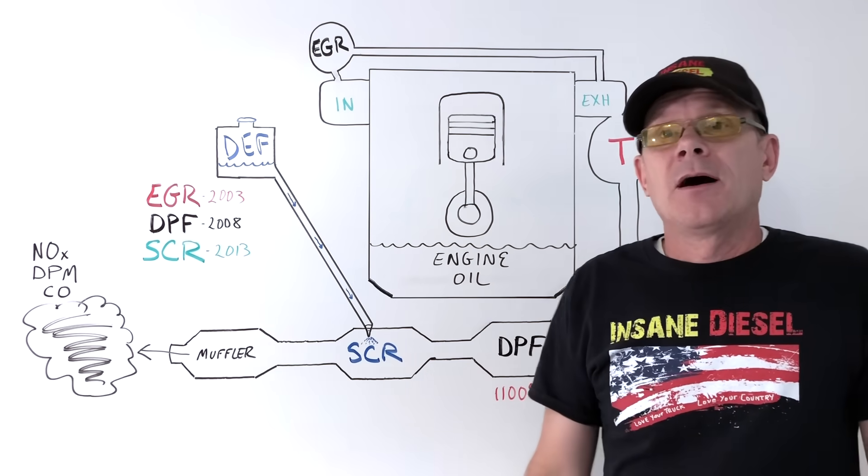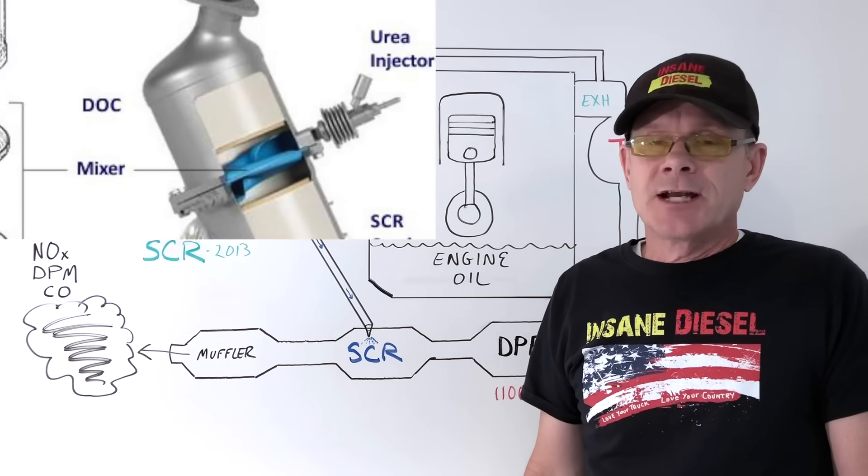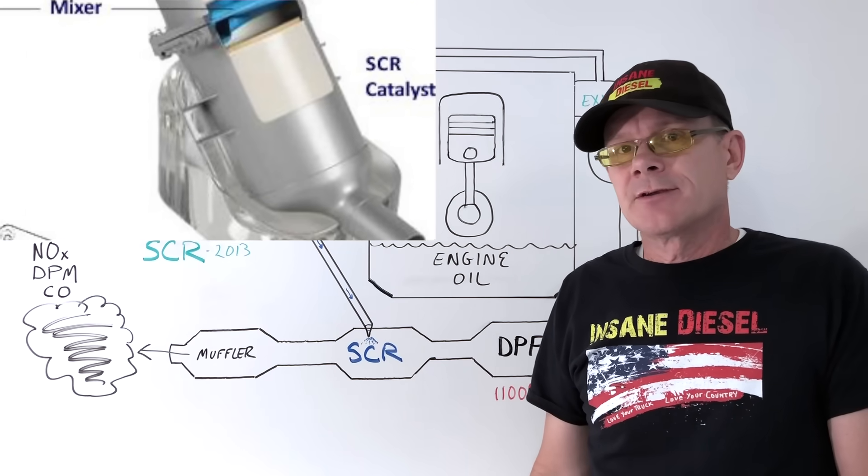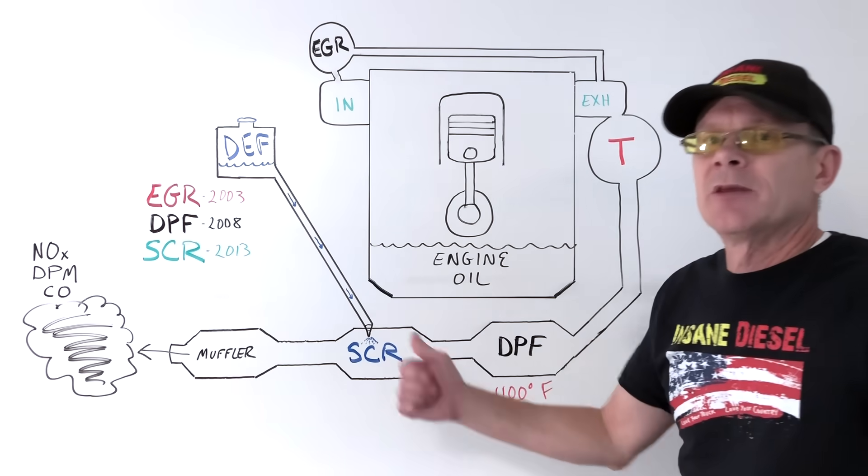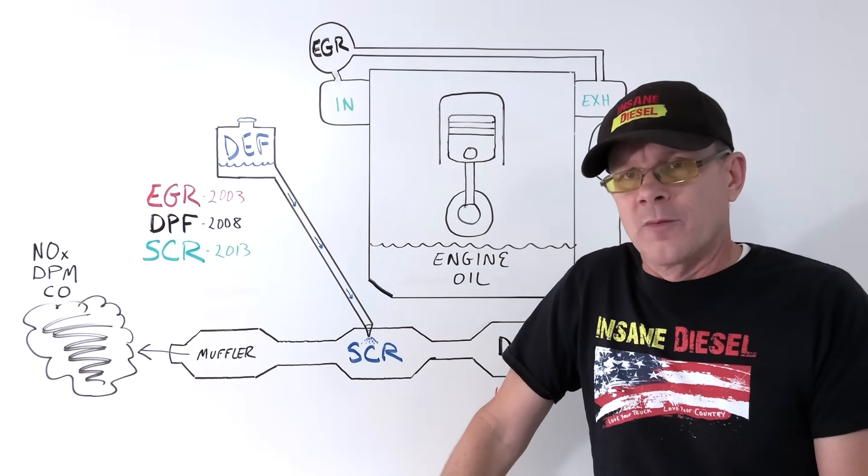Deleting the SCR means removing the device, the injector, capping the electrical connectors, and installing a straight exhaust pipe in its place. The engine computer must then be reprogrammed to exclude the system and improve engine performance.